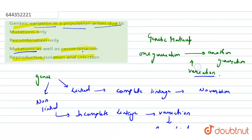And this variation also occurs due to incomplete linkage, that is recombination. So here, mutation as well as recombination will be the correct answer.